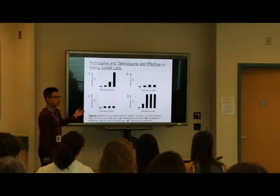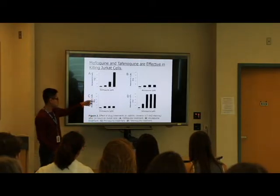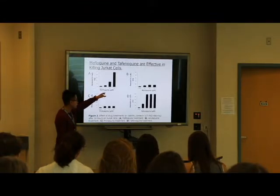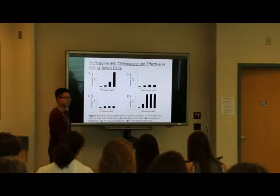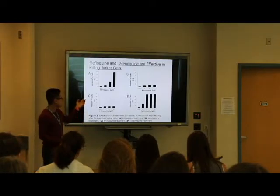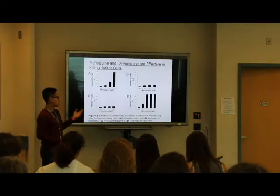Similar to BJet cells, Jurkat cells are even more susceptible to mefloquine and tafenoquine, with 20 µM and 5 µM respectively able to kill almost 100% of the cells. We can conclude that mefloquine and tafenoquine are effective at killing both cell lines, while atovaquone and primaquine are not.